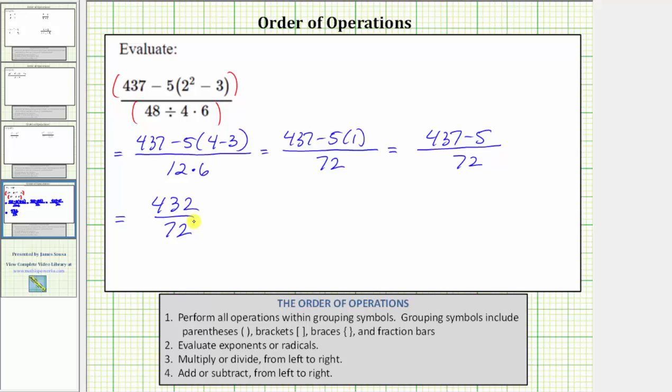And now we need to simplify the fraction. And I believe 72 is a factor of 432. And therefore, one way to simplify this would be to divide 432 by 72. Let's go ahead and show this.